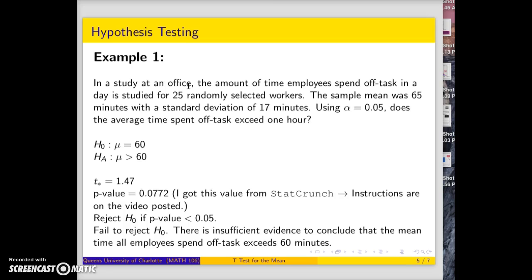you'll see this in the example videos. You get a t-statistic of 1.47 and a p-value of 0.0772. As always, you reject H₀ if the p-value is less than the alpha level, which is 0.05 in this example.